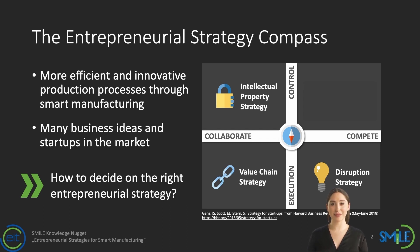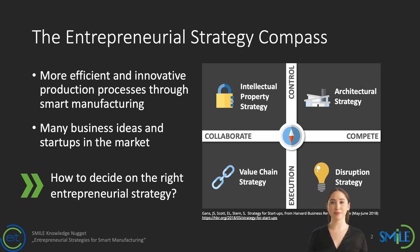In a value chain strategy, entrepreneurs follow a collaborative execution approach with the goal to become the preferred supplier of established firms over other suppliers, constantly improving and adapting their offerings to meet the needs of partner firms. Finally, in an architectural strategy, entrepreneurs try to build and control novel value networks or platforms of value creation between suppliers and customers — business architectures that are hard to imitate, for example because of network effects or technology standards and compatibility.